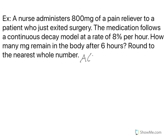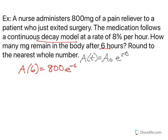So again, we're going to deal with our formula. And what do we know? So as we go through, we're talking about 6 hours. So the amount after 6 hours equals the initial amount—that was 800 milligrams. E is our constant. The rate, and it's decaying, so that's a negative 0.08 times the time of 6 hours.